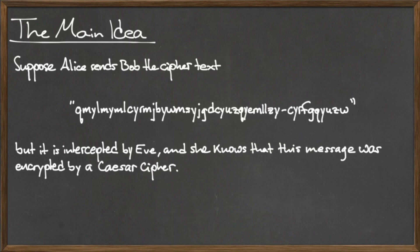Eve knows that this ciphertext was generated using a Caesar cipher. However, she does not know the number of character shifts that Alice used to encode the message.